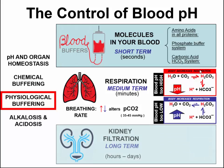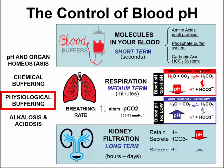Lastly, the renal system can act to modulate blood pH over a period of hours to days. It does this through kidney function, either retaining hydrogen ions and excreting bicarbonate to lower pH, or secreting hydrogen ions and maintaining bicarbonate ions to increase blood pH.